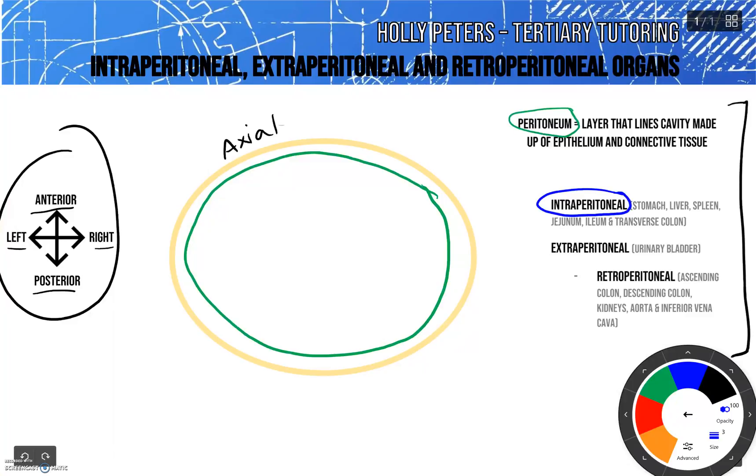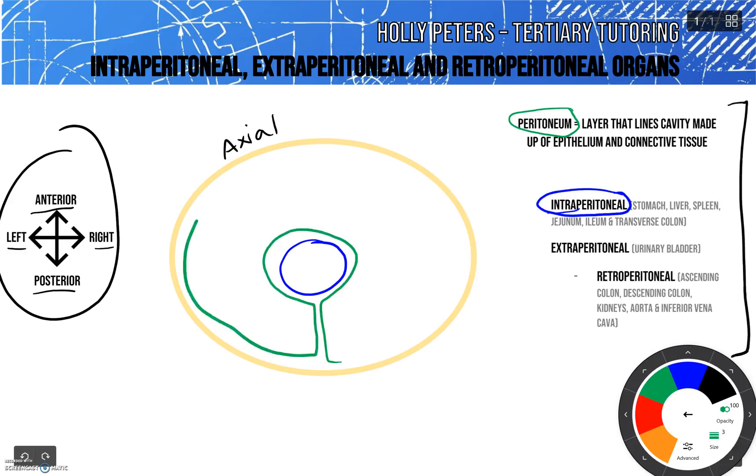Intraperitoneal is the first one here, and as intra implies, it's within the cavity. So kind of like that. The peritoneum actually surrounds it like so. This kind of encapsulation means that it's more mobile within the abdominal cavity, but it still has an anchorage point towards the posterior wall.